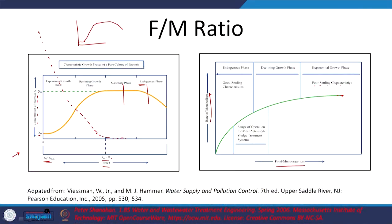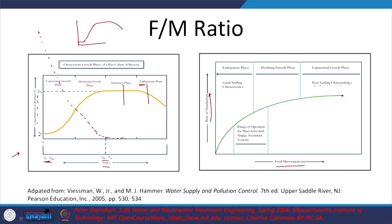Poor settling characteristics result, and with high food in the system, waste is also going to leave through the effluent, so the concentration of waste in the effluent will be relatively higher. If F/M is too low, you get different issues with respect to sludge bulking. We want that sweet spot between the declining growth phase and the endogenous growth phase — that is the ideal range of operation where F/M is not too low but certainly not too high.